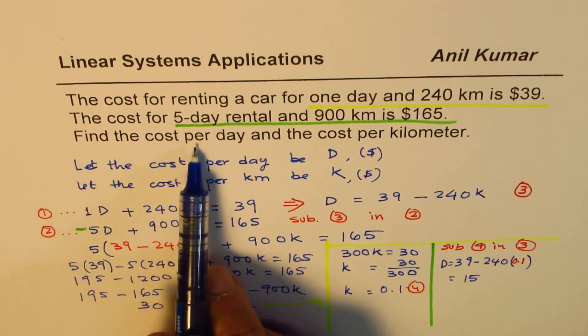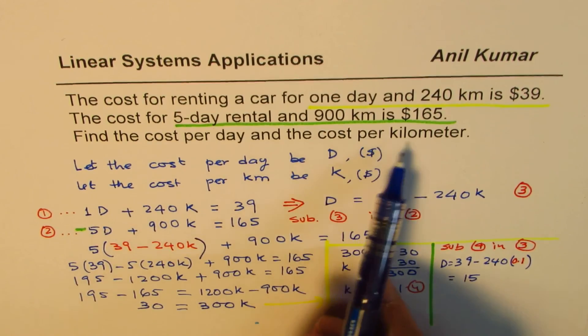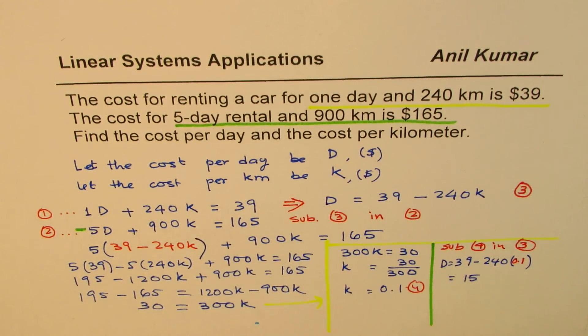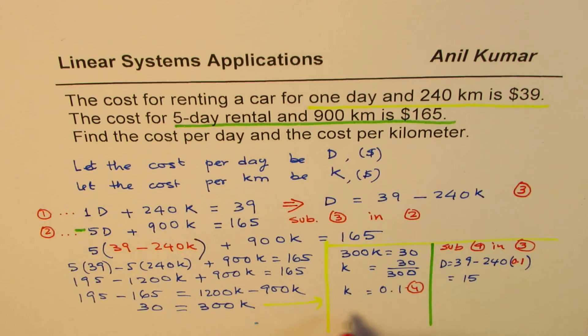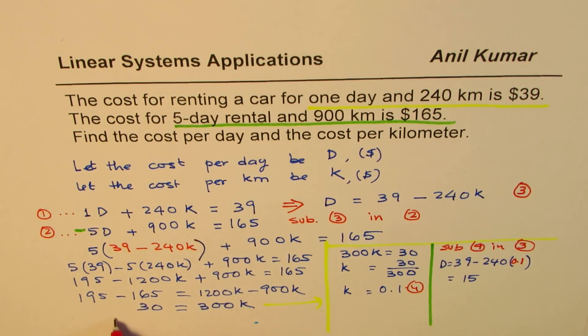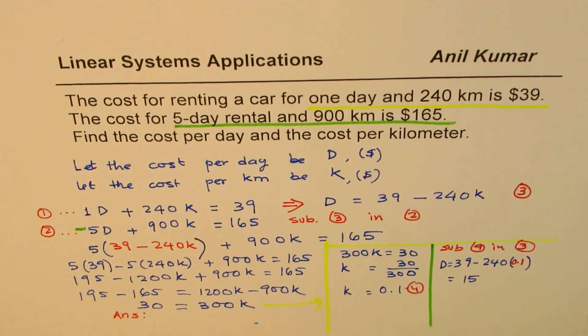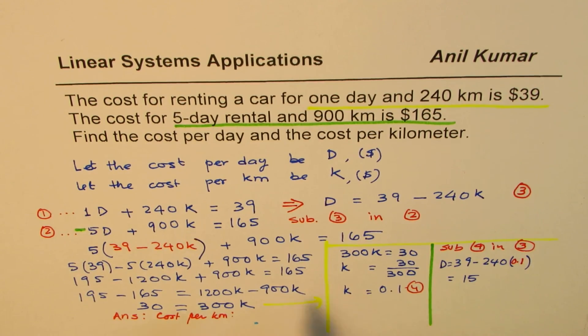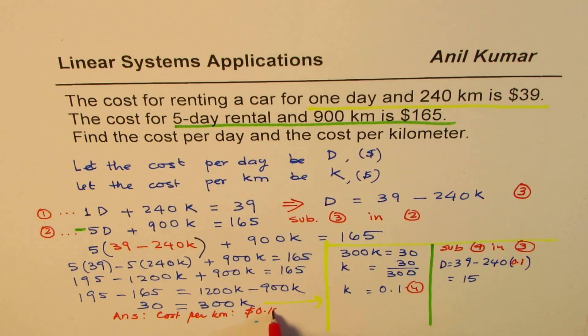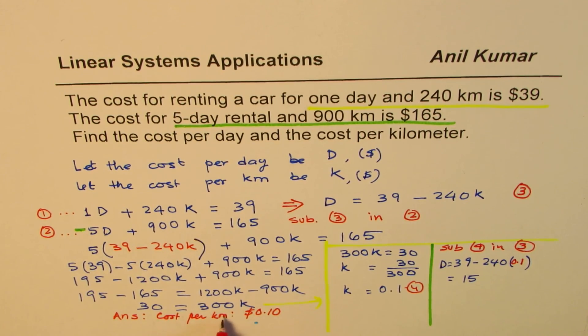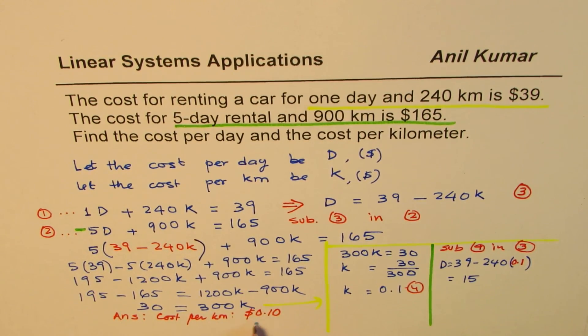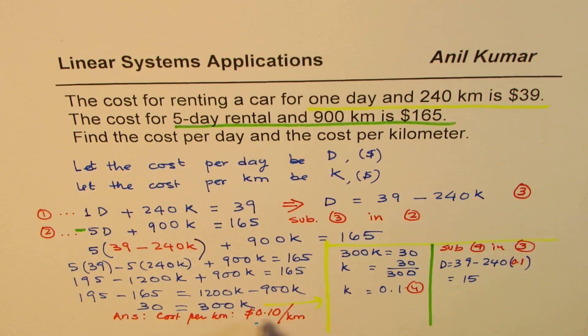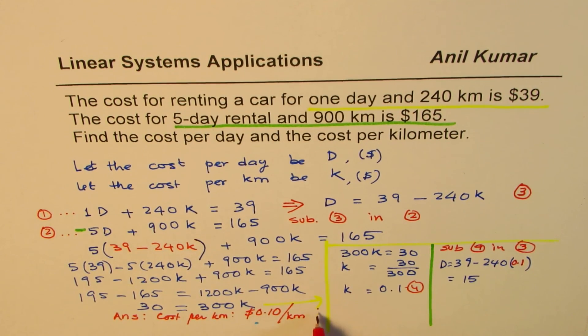Now let's write down the answer. It says find the cost per day and cost per kilometer. Both these costs are in dollars. So our answer is cost per kilometer. We should write it in dollars. It is $0.10. That is cost per kilometer. You can also write this dollars per kilometer like this, per kilometer. That's a good way of writing.